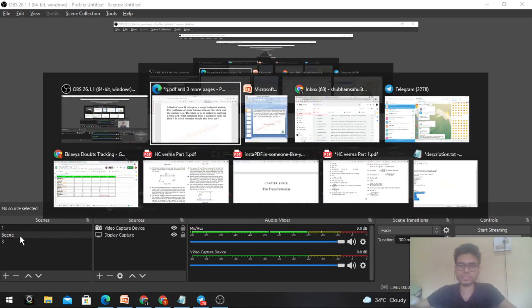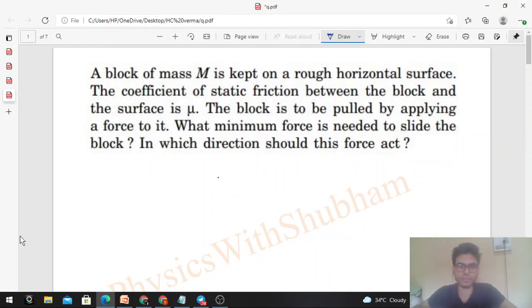Okay, hi everyone. Today let's discuss one interesting problem from H.C. Verma. A block of mass M is kept on a rough horizontal surface. The coefficient of static friction between the block and the surface is μ. The block is to be pulled by applying a force to it. What minimum force is needed to slide the block? In which direction should this force act?